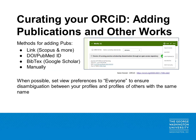Perhaps the most important element of your ORCID is the works section. To add publications, you can link to a publication indexing platform such as Scopus, import publication information via the DOI or PubMed ID, or import a list of publications from Google Scholar via a BibTeX import. To link your profile to Scopus, click on the add button on the works section and then click on search and link. Select Scopus from the drop-down menu and Scopus-indexed publications will be added automatically upon publication. An email verification is sent to ensure the accuracy of added publications. For non-indexed items such as conference posters, you can also manually add information. When possible, set the view preferences to everyone to ensure disambiguation between your profile and the profiles of others with the same name.